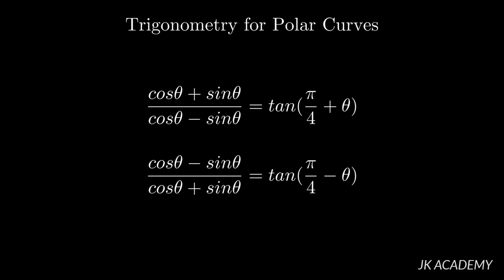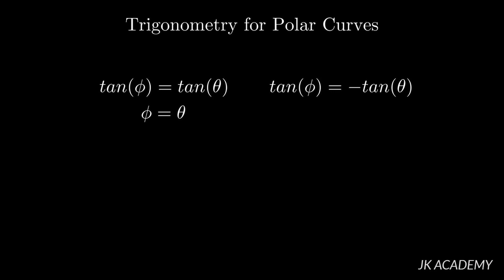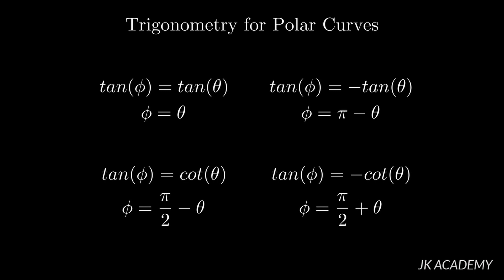We have to learn four cases to solve polar curves. Case one: tan phi equals tan theta, so phi equals theta. Case two: tan phi equals minus tan theta, so phi equals pi minus theta. Case three: tan phi equals cos theta, so phi equals pi by 2 minus theta. Case four: tan phi equals minus cos theta, so phi equals pi by 2 plus theta.